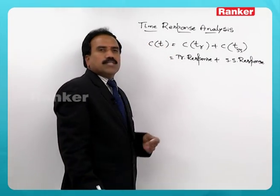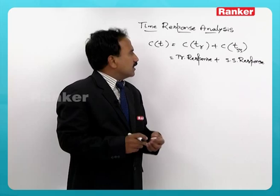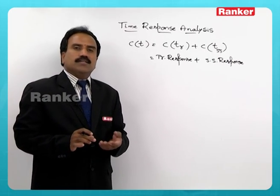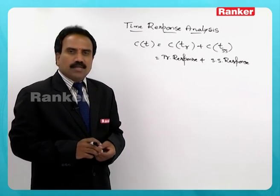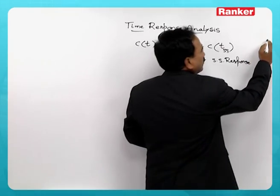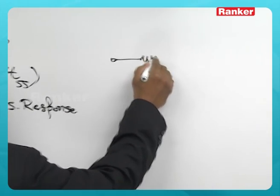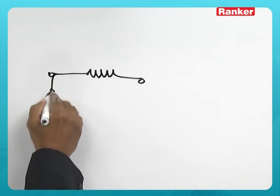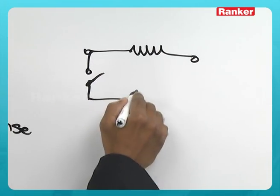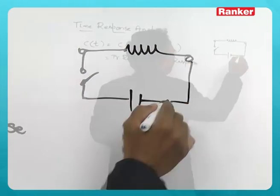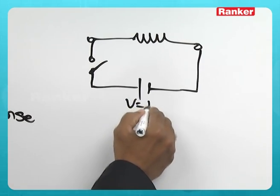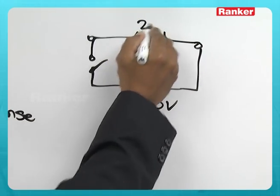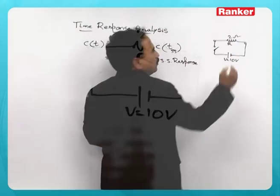To understand better what exactly transients are, what elements cause transient response, let us consider a simple example: a resistor with some switch is excited by some voltage source, say V equals 10 volts, say R is 2 ohms.